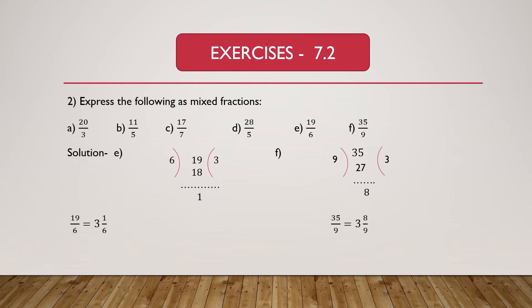Now we solve part F, which is given as 35 divided by 9. This fraction we have to express as a mixed fraction. Here 35 is the dividend and 9 is the divisor. We know 9 multiplied by 3 equals 27, then 35 minus 27 equals 8. We get 3 as the quotient and 8 as the remainder. So 35 divided by 9 equals 3 and 8/9.